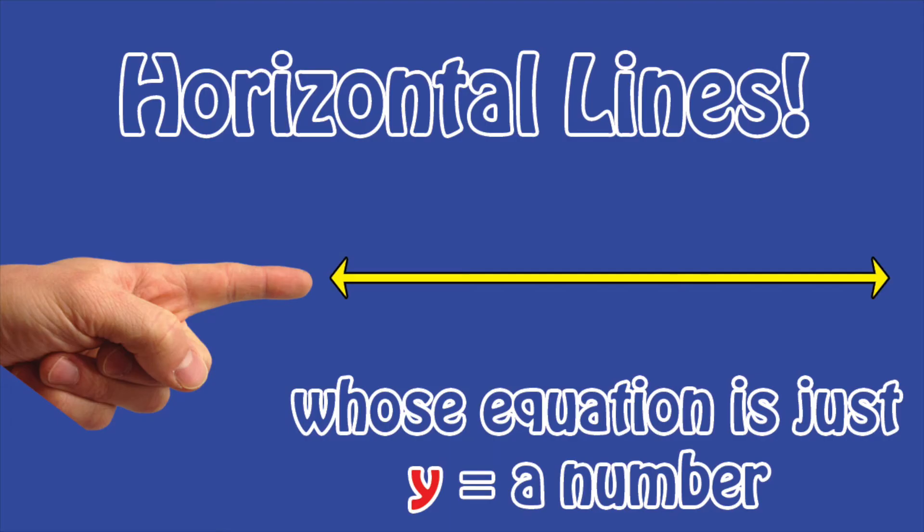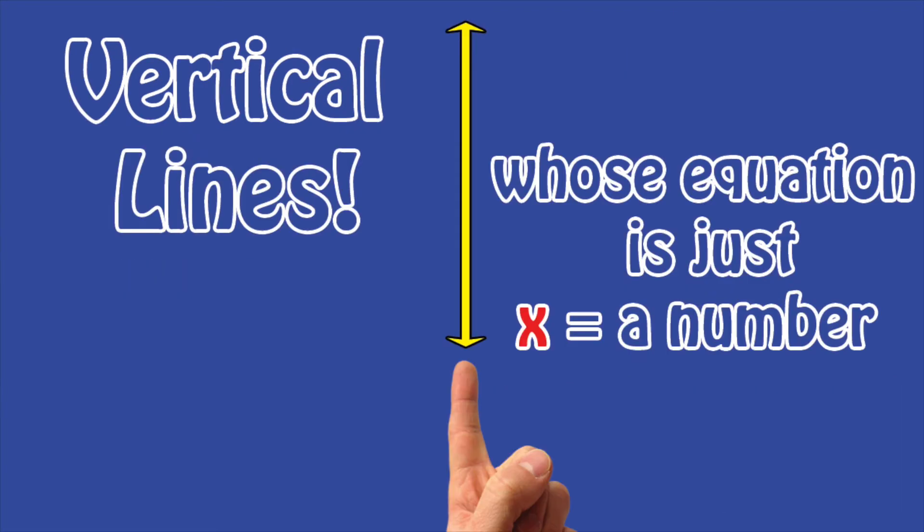Yeah, we've got horizontal lines, whose equation is just y equals a number, vertical lines, whose equation is just x equals a number.